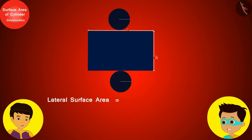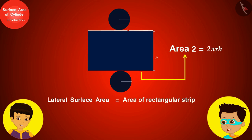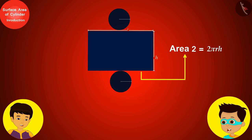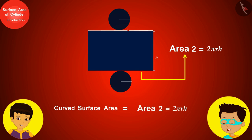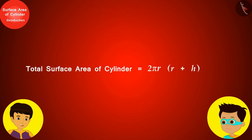The lateral surface area of the cylinder is equal to the area of this rectangular strip. Because this surface of the cylinder is curved, we can also call it the curved surface area of the cylinder. Therefore, the formula for the curved surface area of the cylinder is 2πrh.